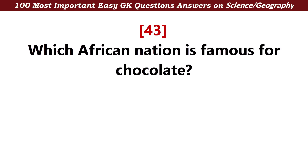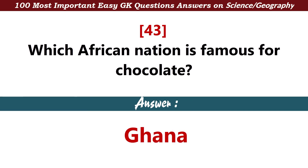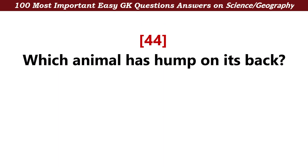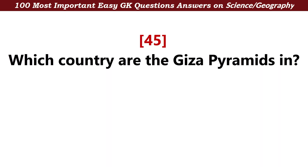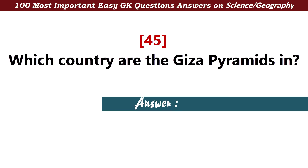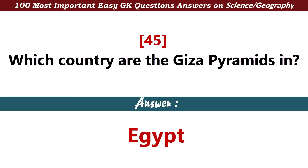Which African nation is famous for chocolate? Answer: Ghana. Which animal has a hump on its back? Answer: Camel. Which country are the Giza pyramids in? Answer: Egypt.